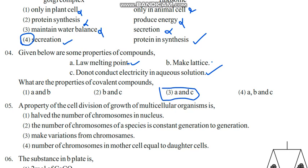A property of cell division of growth of multicellular organisms is. They are asking the property relevant to growth, that means mitosis cell division. So fourth one will be the answer because one, two, three are all properties of meiosis. Fourth is the property of mitosis which is needed for the growth of multicellular organisms.